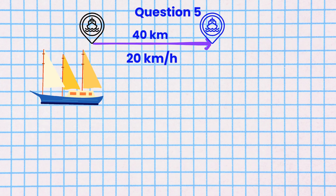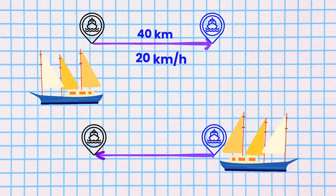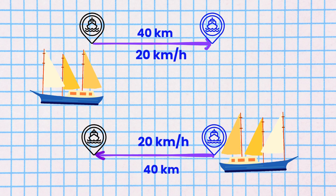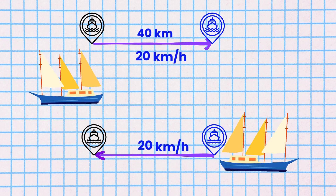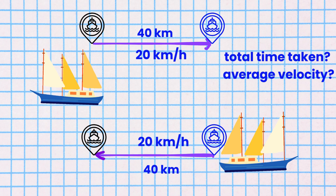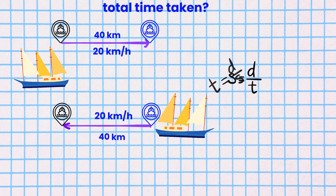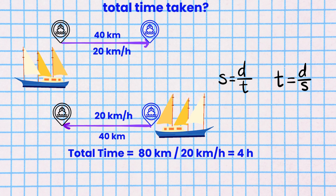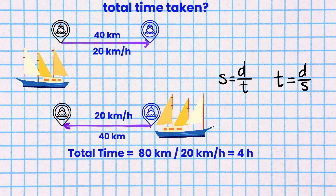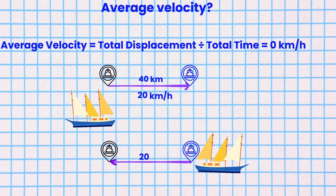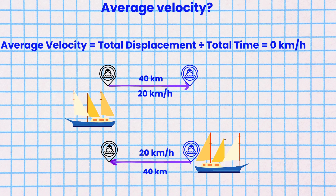Question 5. A boat travels 40 kilometers upstream at a constant speed of 20 kilometers per hour, then travels 40 kilometers downstream at 20 kilometers per hour. What is the total time taken and average velocity? Total time is total distance divided by the average speed, which equals 80 kilometers divided by 20 kilometers per hour, so that equals 4 hours. The average velocity equals 0 kilometers per hour because the total displacement is 0 kilometers.